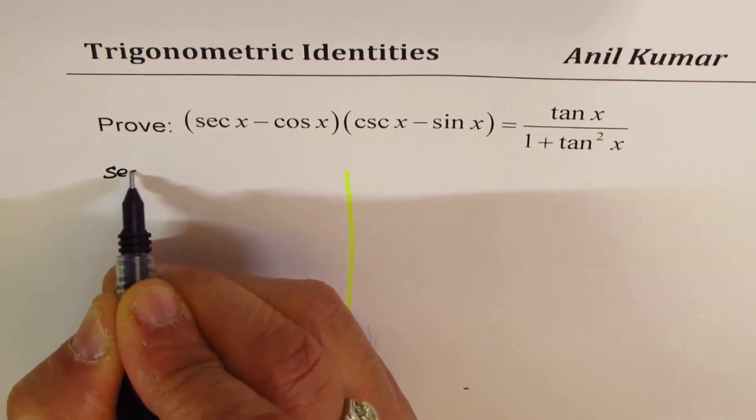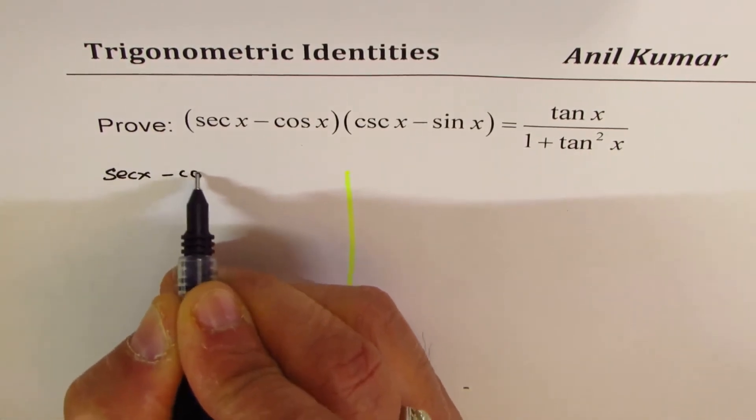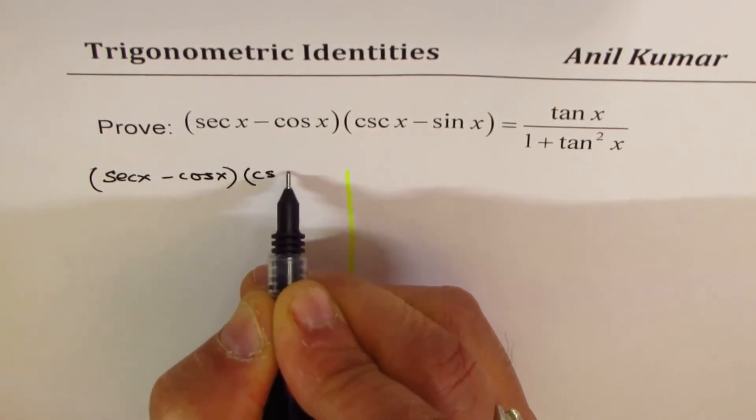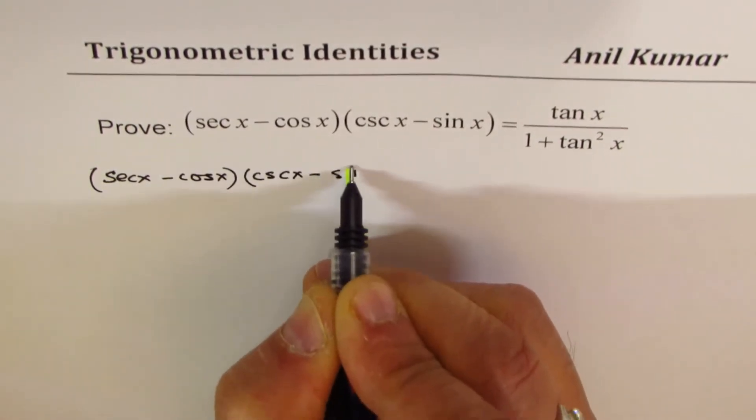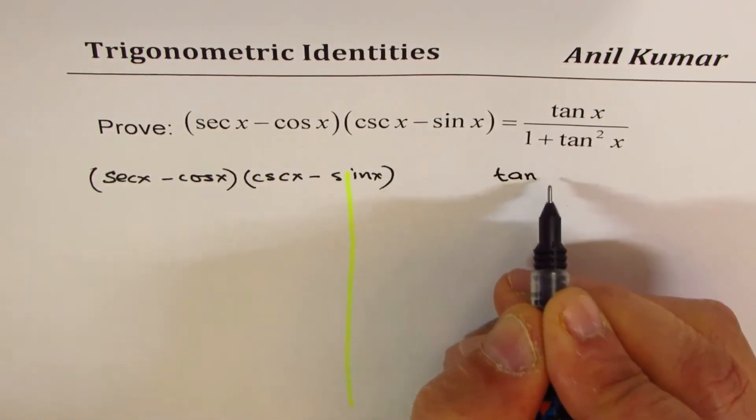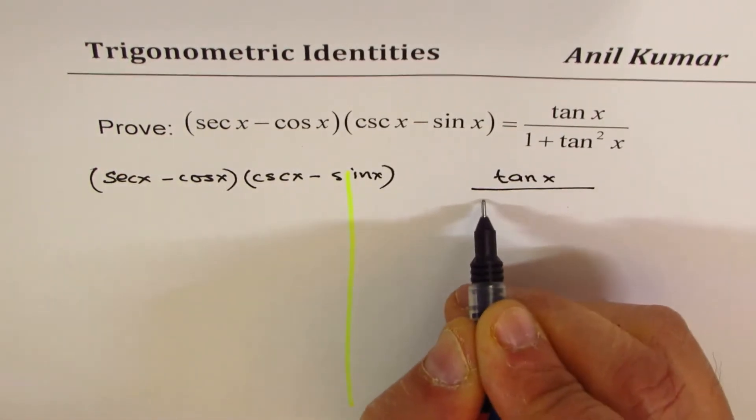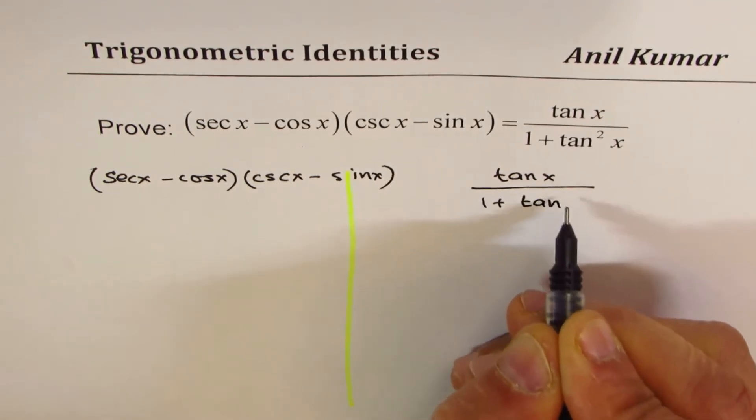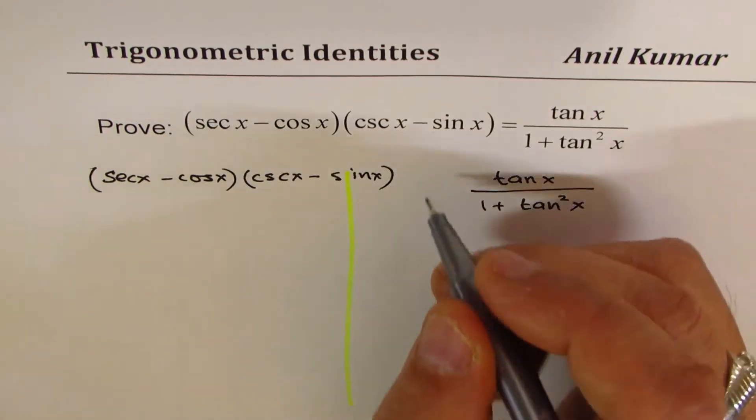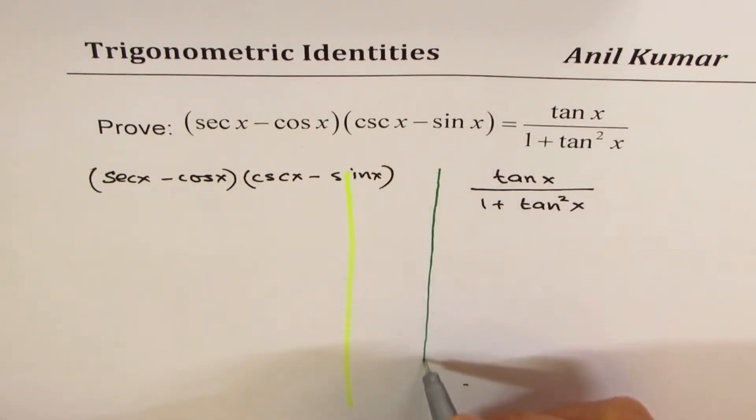On the left side, we have (sec x - cos x)(csc x - sin x). On the right side, we have tan x / (1 + tan²x). Let me shift this a bit to the right side.